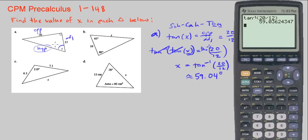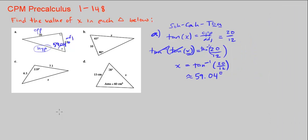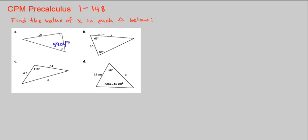So x is 59.04 degrees. Now let's move on to part B. Part B is asking us about this side — the value of x is not an angle, it's a side. And this is not a right triangle, it's just a triangle. All angles look less than 90 degrees, so we know it's going to be acute. It looks to be scalene because all the sides look to be different lengths. So let's go ahead and determine what can help us get this.